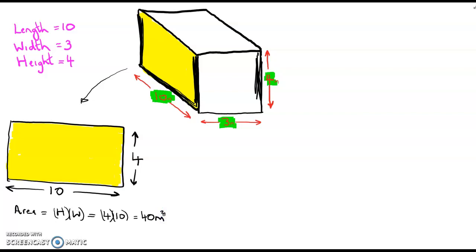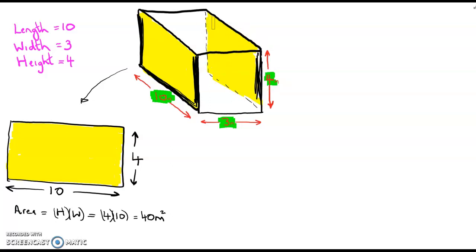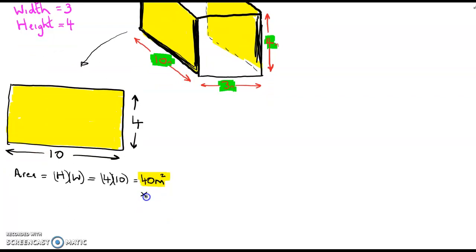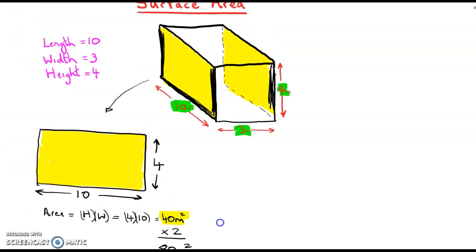If I imagine looking through the rectangular block, I can see there's another side on the far side that has the exact same dimensions. So there are essentially two of these rectangles — I need to multiply that area by two, giving me 80 meters squared. So those two yellow sides are accounted for.